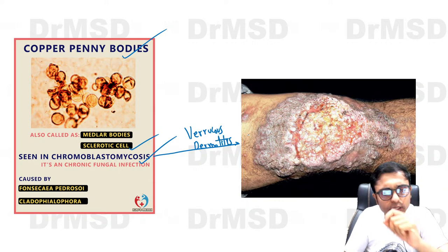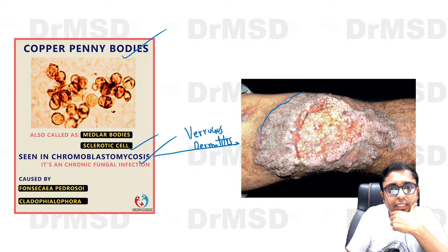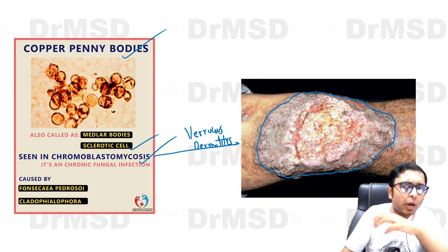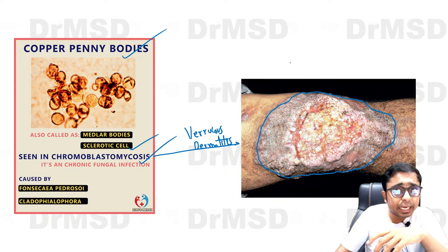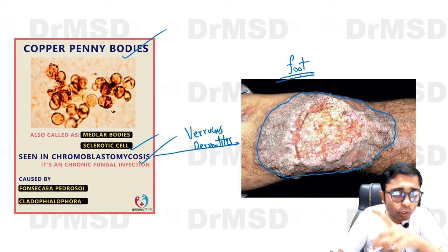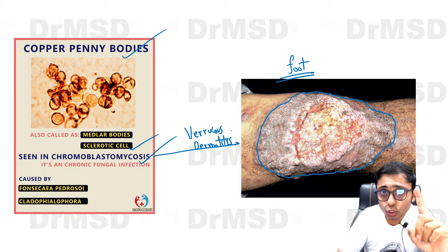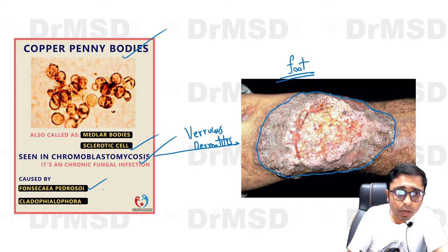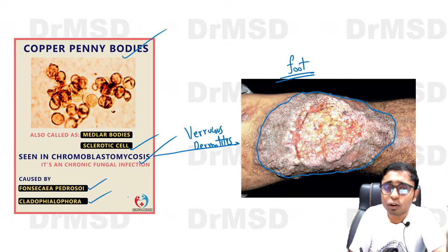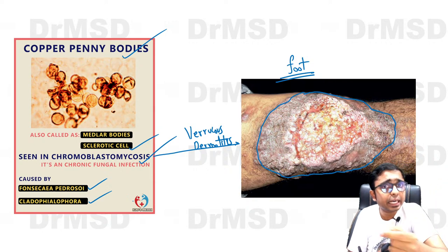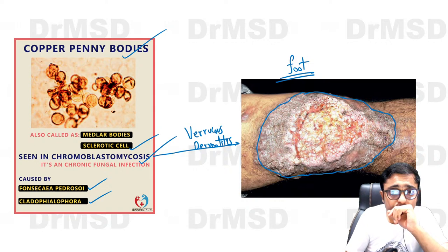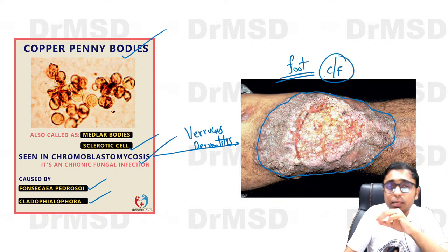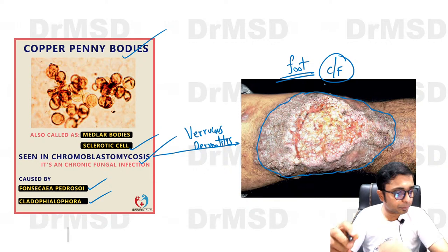Chromoblastomycosis is also called verrucous dermatitis. Patients present with a cauliflower-like verrucous growth or plaque, most likely over the extremities and the foot. Along with mycetoma and sporotrichosis, it is an example of a deep fungal infection due to inoculation of fungi such as Fonsecaea pedrosoi and Cladophialophora.